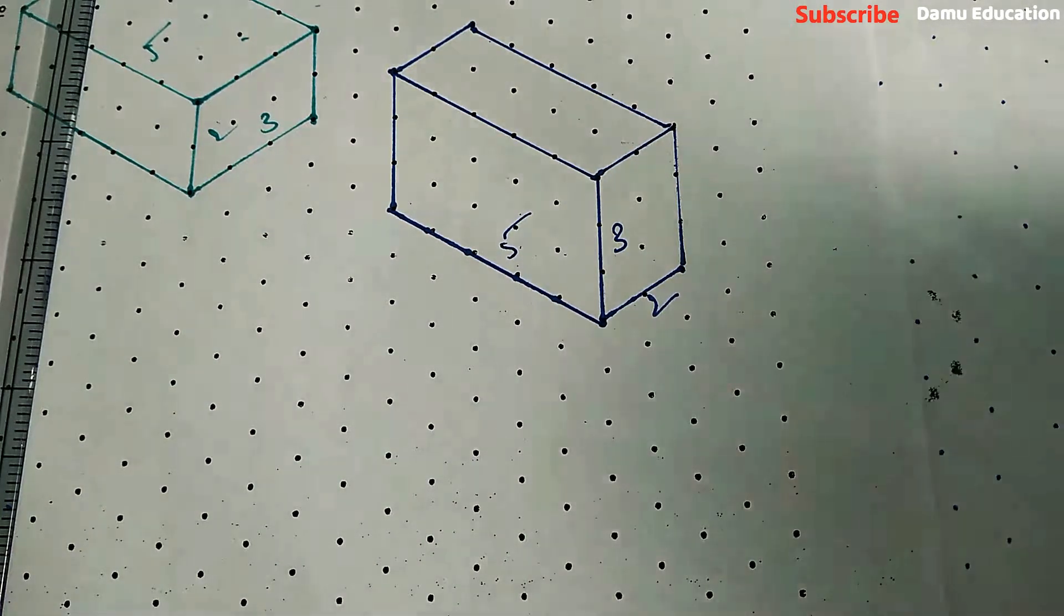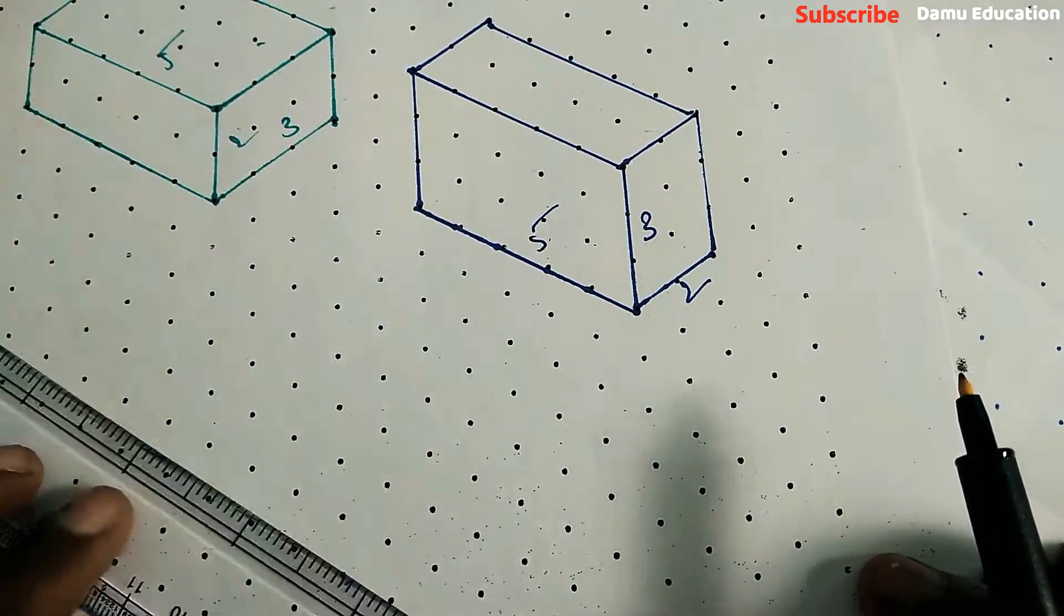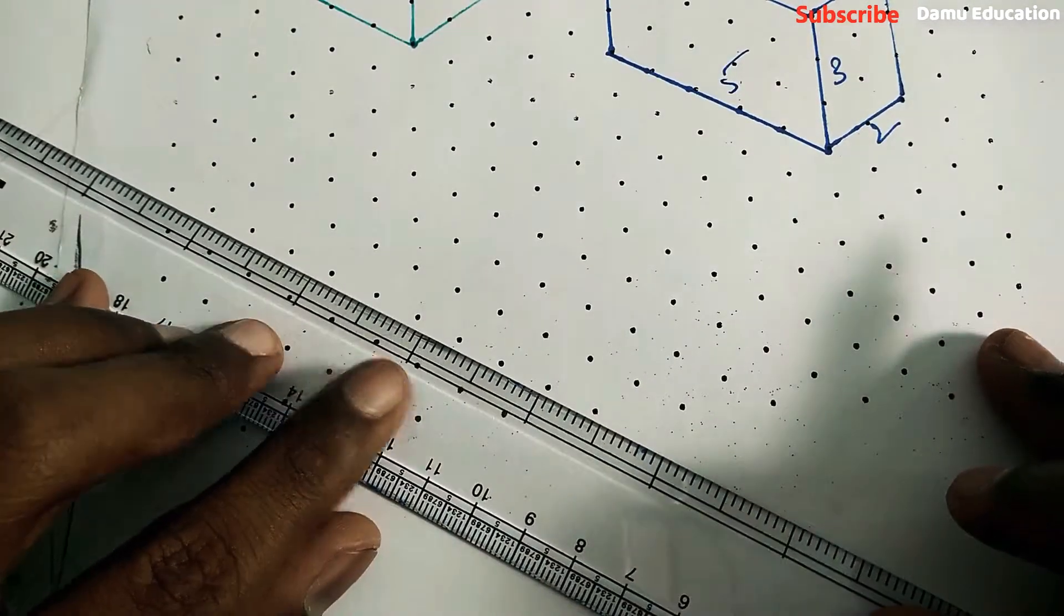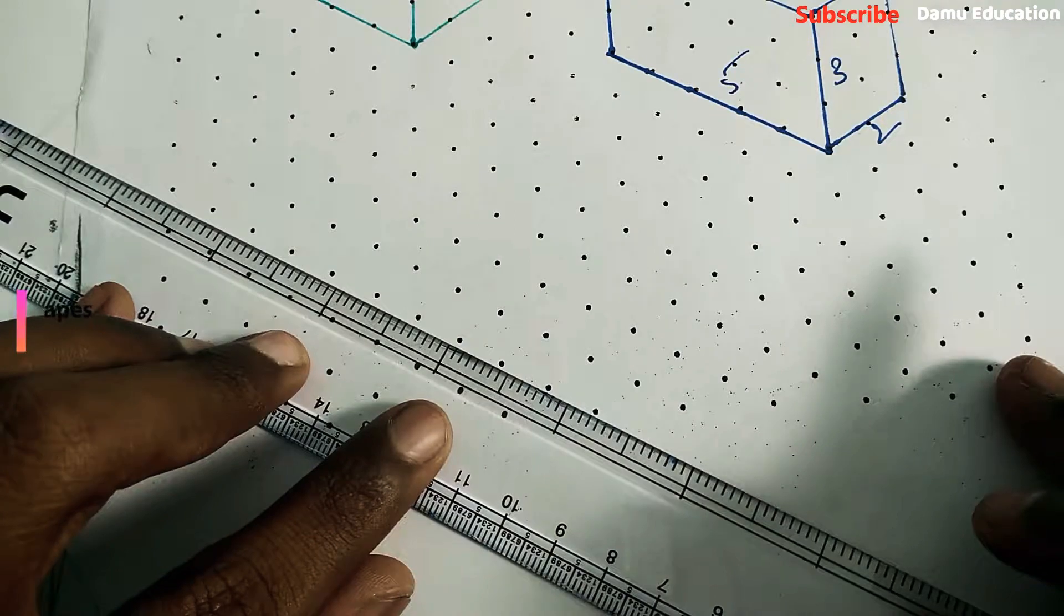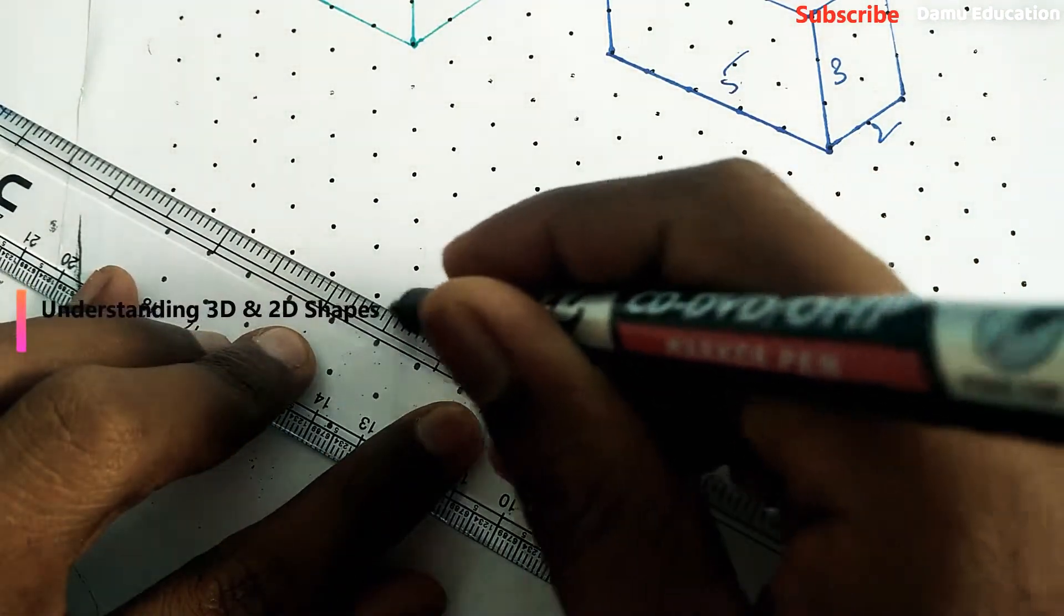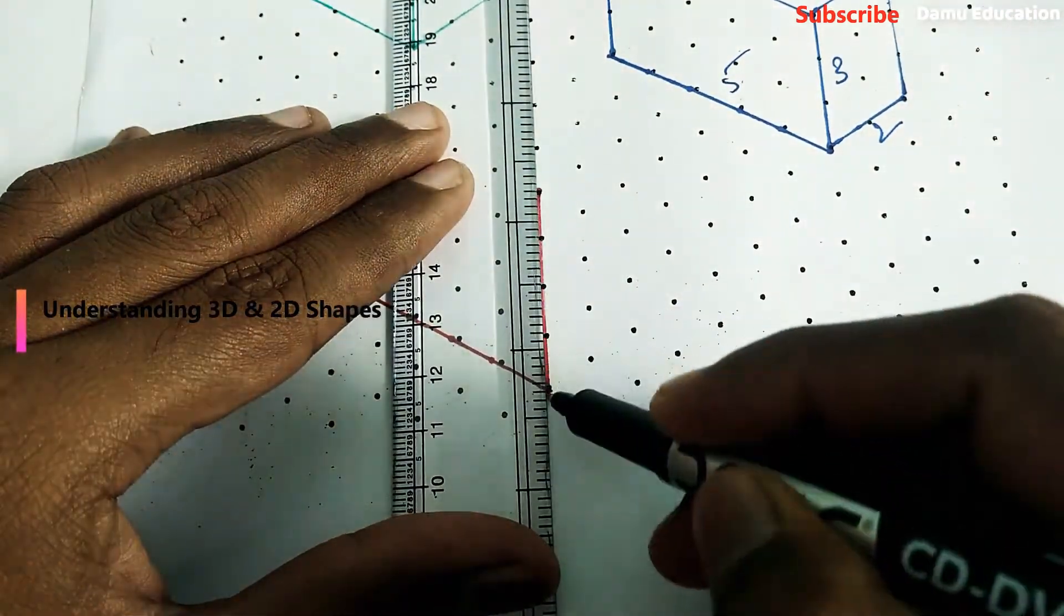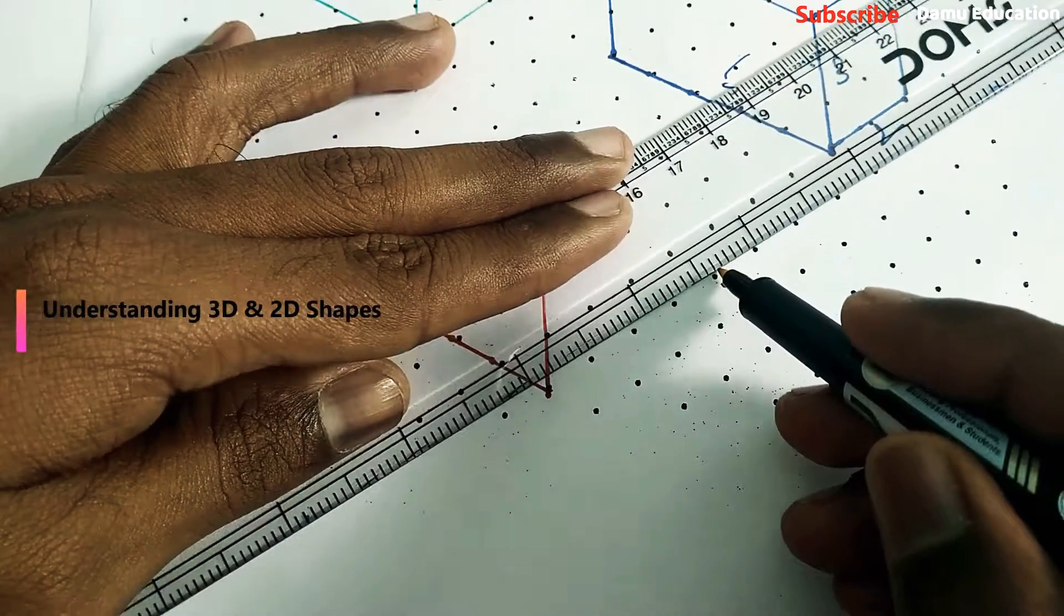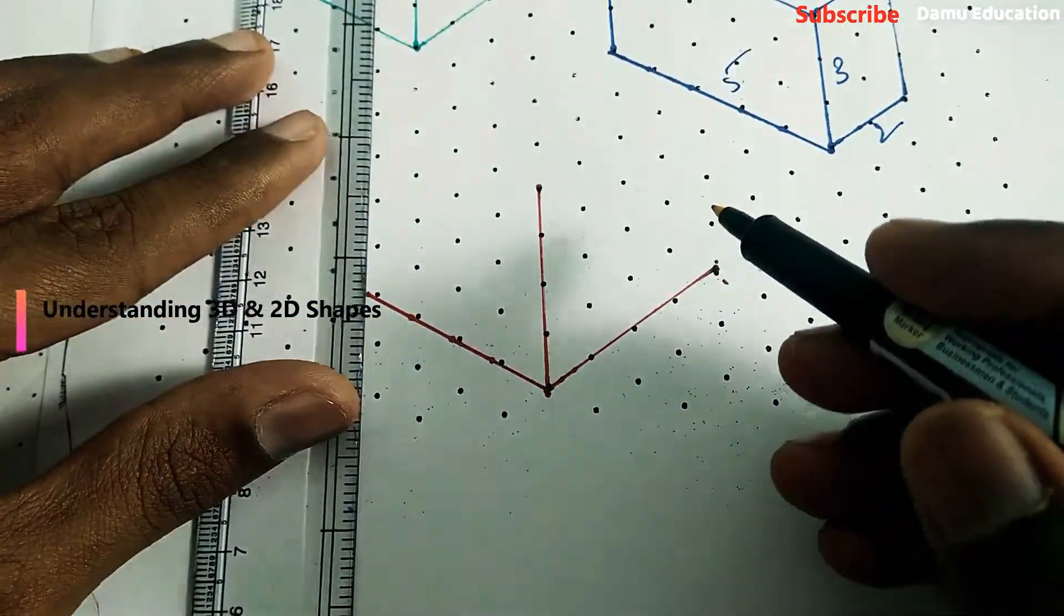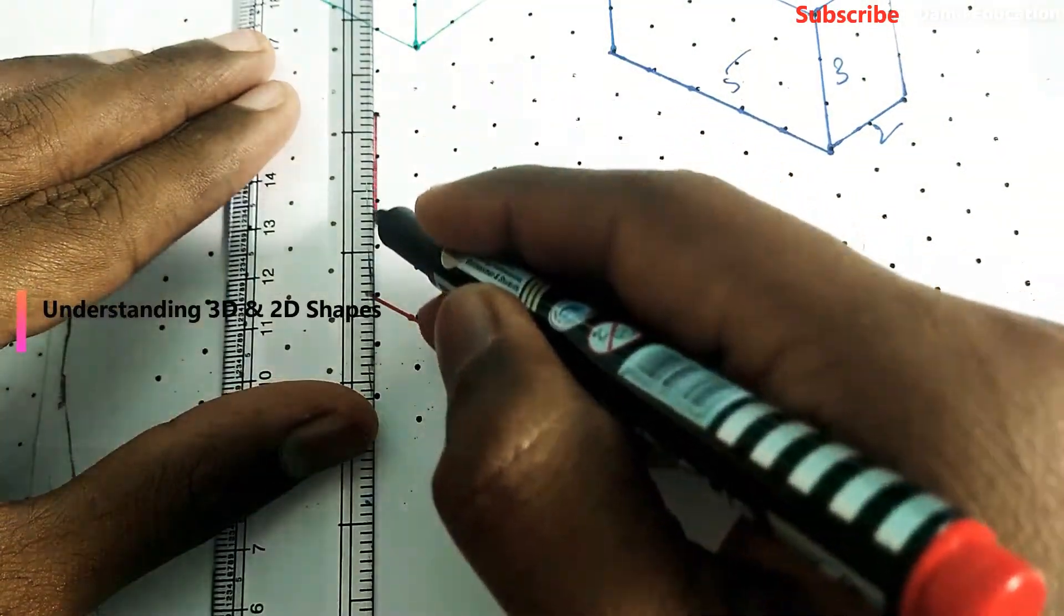Next one: cube with 4 centimeter edge. So draw a cube with 4 centimeters. Draw first the base with 4 centimeters like this. So here: 1, 2, 3, 4. Then here up also 4: 1, 2, 3, 4. This side also: 1, 2, 3, 4. Then it's coming like this.